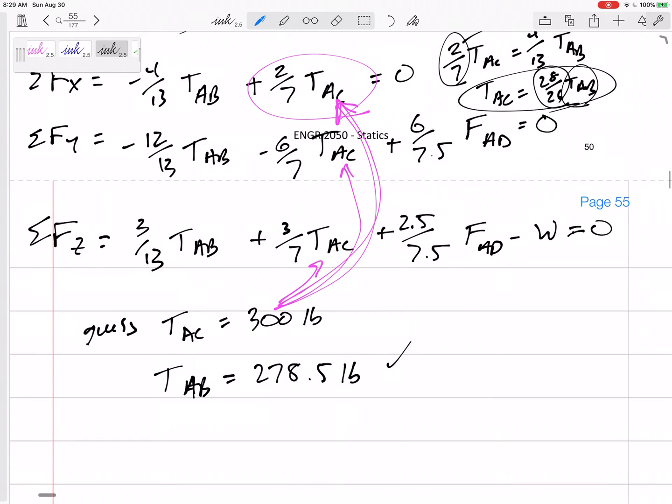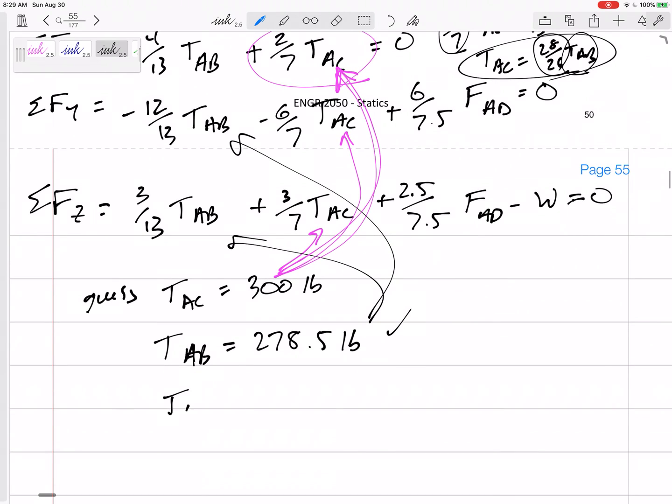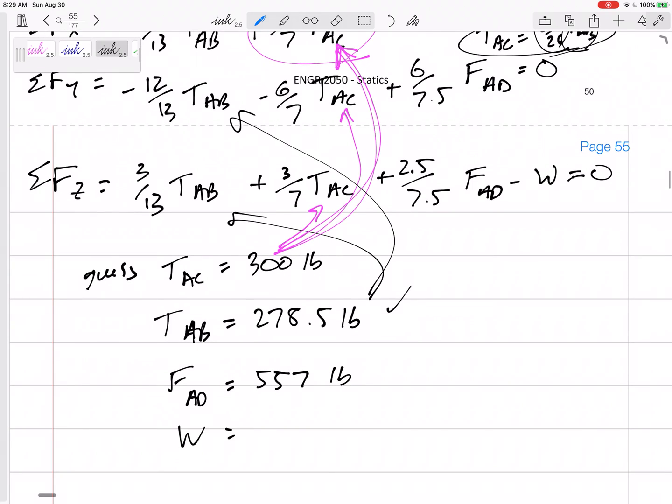And, so then I would, you know, start plugging everything else in to try to solve for FAD. From this equation, I would get 557. And, then solve for W, I would get 407 pounds. And, that is the right answer, because I guessed right.